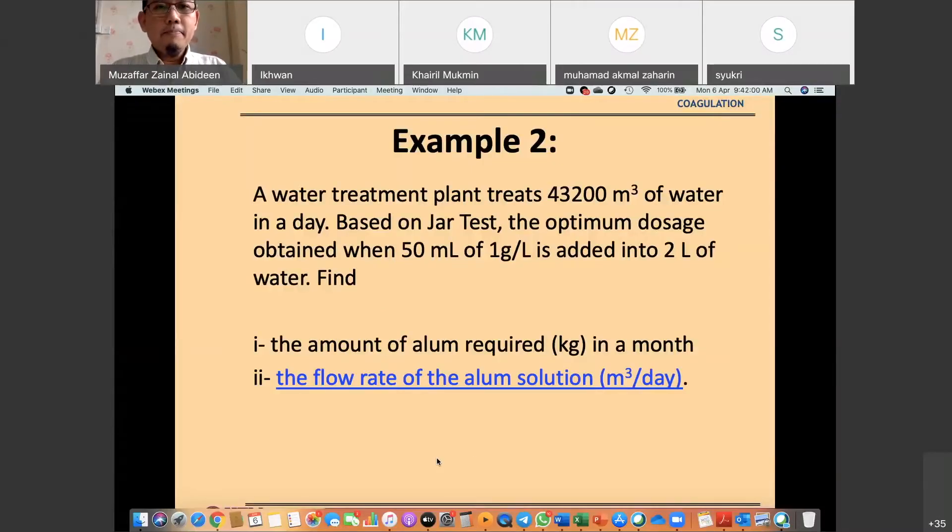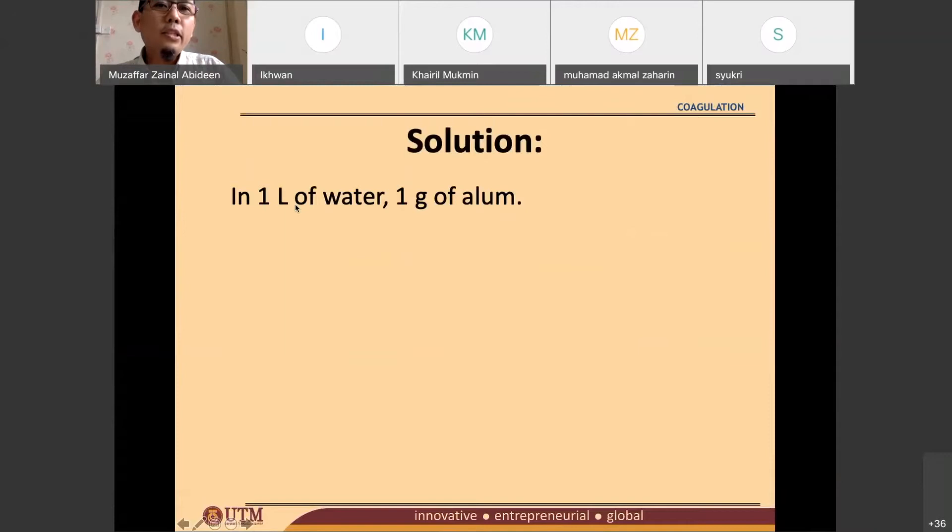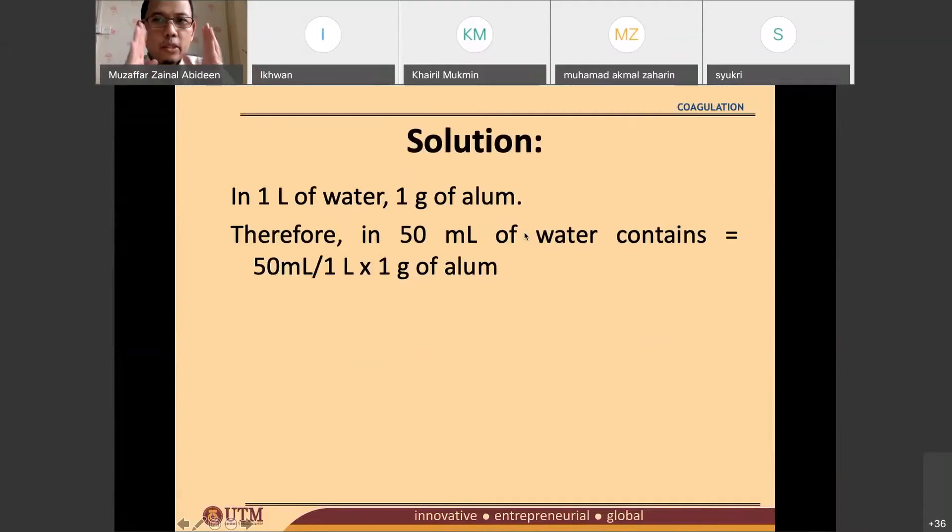So we like to know the amount of alum. 1 liter of water got 1 gram of alum. So we know that in 50 ml of water, the amount of water need to be transferred into 2 liters of jar test. So 50 ml over 1 liter times 1 gram of alum. So the amount of alum being transferred is actually 50 mg of alum. This is simple mathematics. There's no rocket science in that.